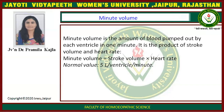Now what is minute volume? Minute volume is the amount of blood pumped out by each ventricle in one minute. It is the product of stroke volume and heart rate. The normal value of minute volume is 5 liters per ventricle per minute — it means 5 liters from each ventricle in a minute.